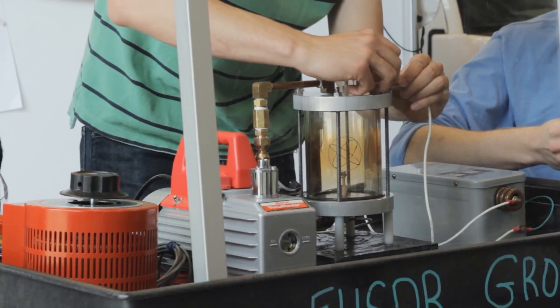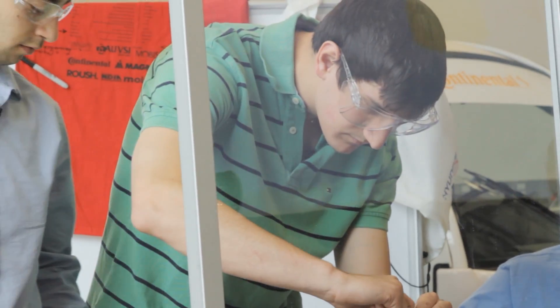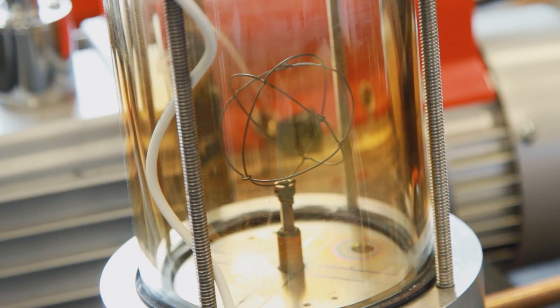Here specifically, we are building a Hirsch-Farnsworth Fuser. It is an inertial electrostatic containment device. It uses a powerful electrical field to both create and contain a ball of plasma.